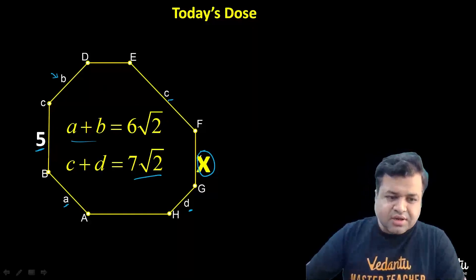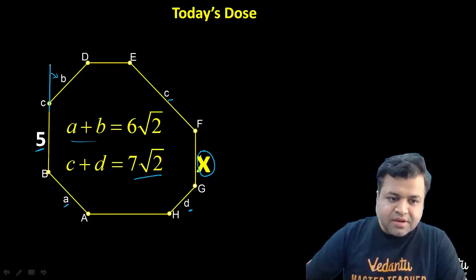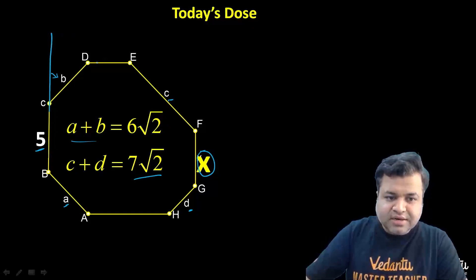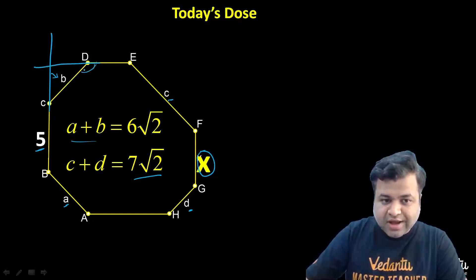Just make a little construction. Extend BC. Since they were equiangular, so equiangular octagon, this angle was 135, 45. This should be 45 and that means this is perpendicular.